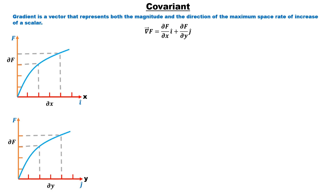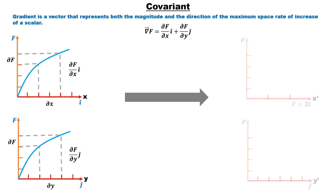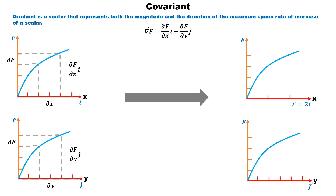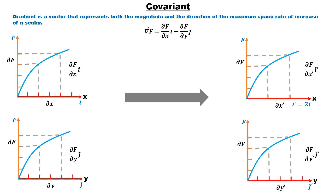To understand this better, we draw the gradient of the function separately for both directions, because it is difficult to visualize two directions with the function together. Now, changing the coordinate system again — what will be the difference on the gradient? We consider the same coordinate system whose i-cap prime basis is double of i-cap. Observing both the new and old coordinate system, we find that due to i-cap prime being double, ∂x prime has become half in comparison to earlier in this direction.